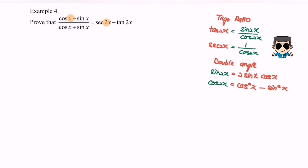Starting with the right-hand side: sec 2x equals 1 over cos 2x, and tan 2x equals sin 2x over cos 2x.